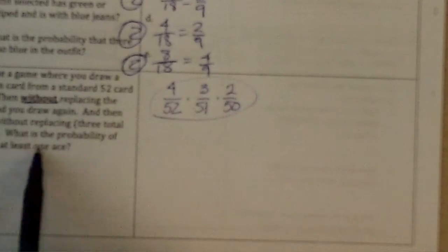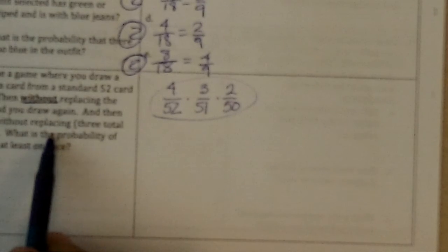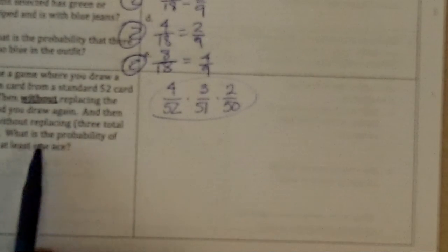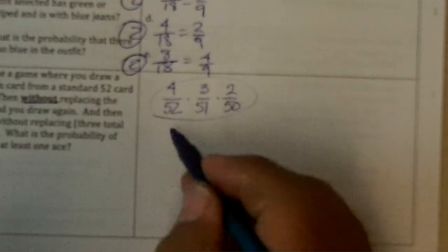But, it says at least one ace. So, we could get all three aces, or two of them aces in any order, or one of them an ace in any spot. First draw, second or third. Well, that's a lot of things to figure out. Let's figure out the opposite. What's the probability of not getting an ace and take it away from one?